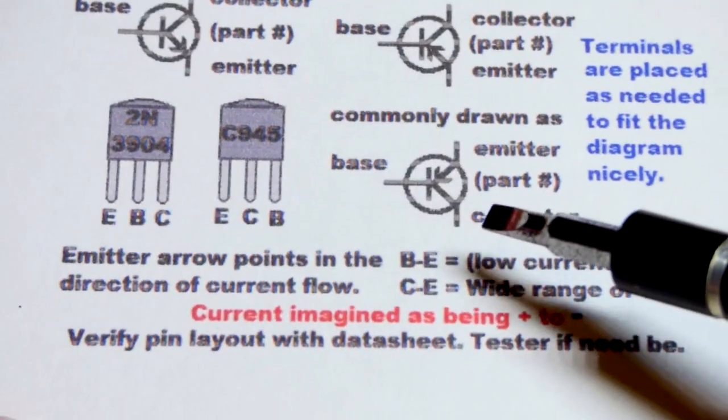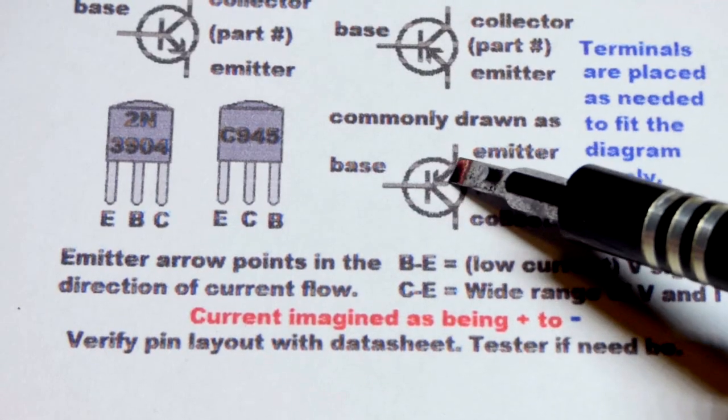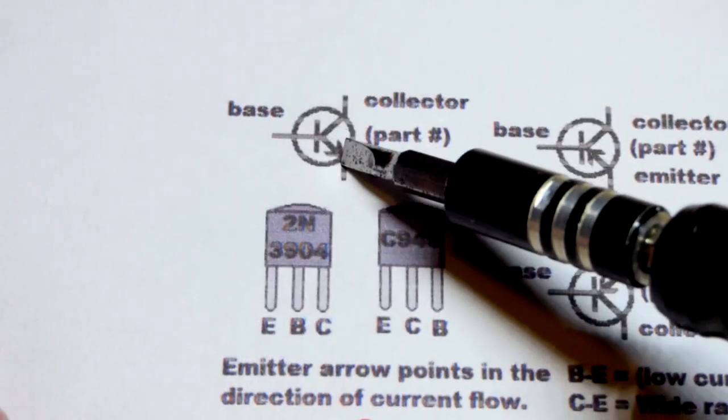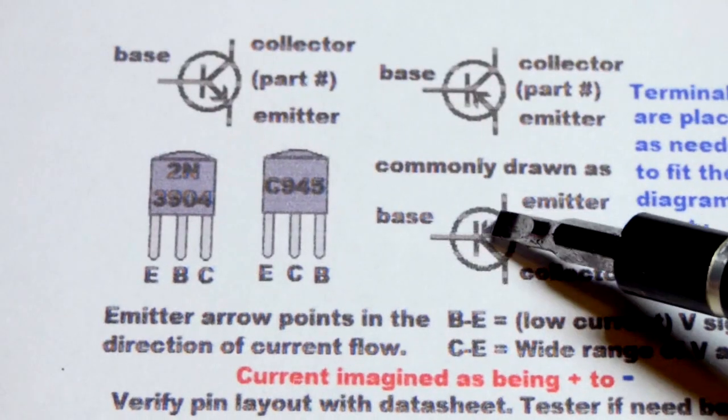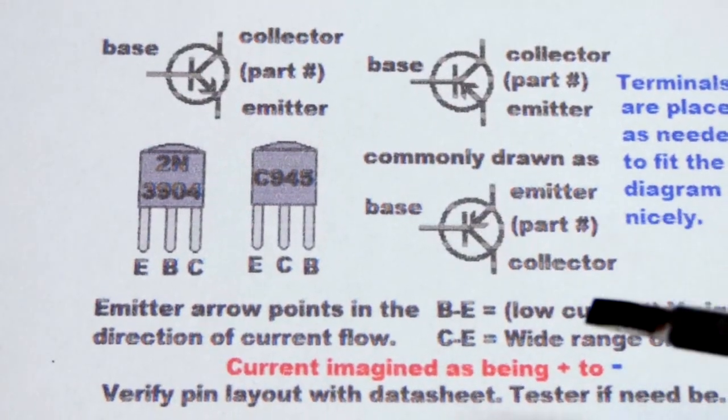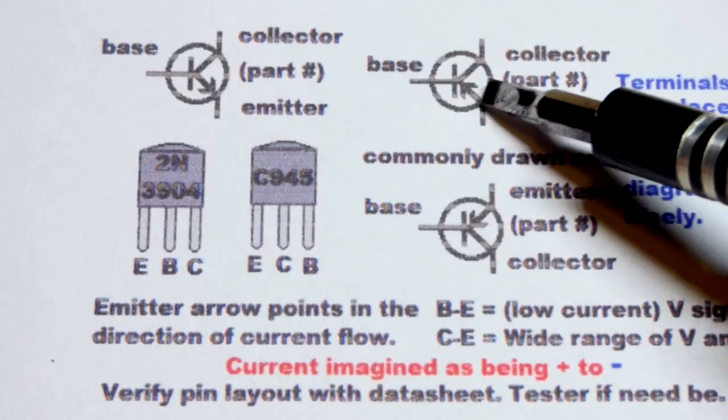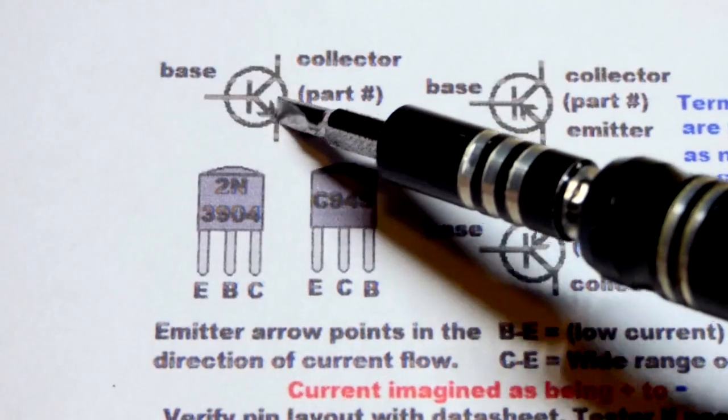So now the PNP bipolar junction transistor, when you're looking at a schematic diagram, will probably be drawn more like this. So the NPN will probably have the emitter down at the bottom, whereas the PNP will probably have the emitter at the top. That's how you know where the emitter is, where you see the arrow for that.